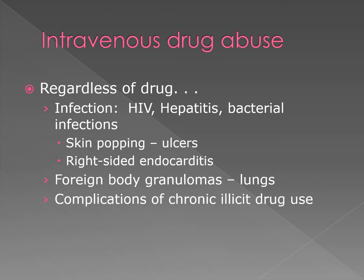Intravenous drug use can lead to a multitude of chronic conditions and complications. Mostly you're going to get skin infections from injecting through skin that likely isn't cleaned beforehand, leading to staph and strep infections, as well as antibiotic-resistant organisms. Common complications include hepatitis, HIV, and right-sided endocarditis of the tricuspid valve. Foreign body granulomas are mostly found in the lungs and can also be seen from snorting or inhaling substances, but they appear in different locations depending on whether the drugs were inhaled versus injected.